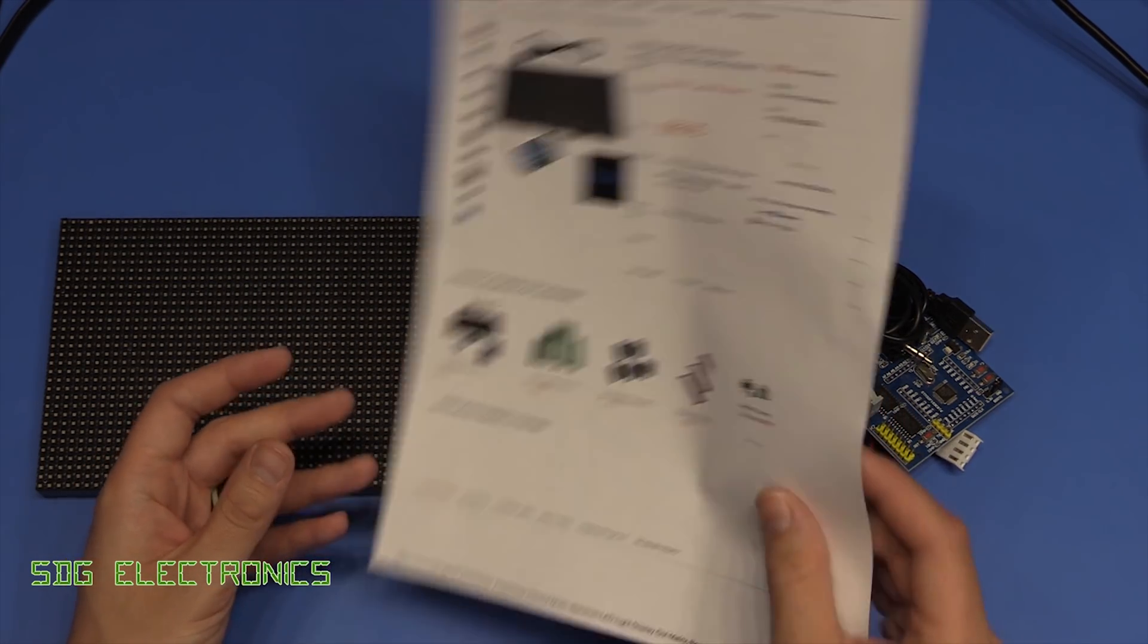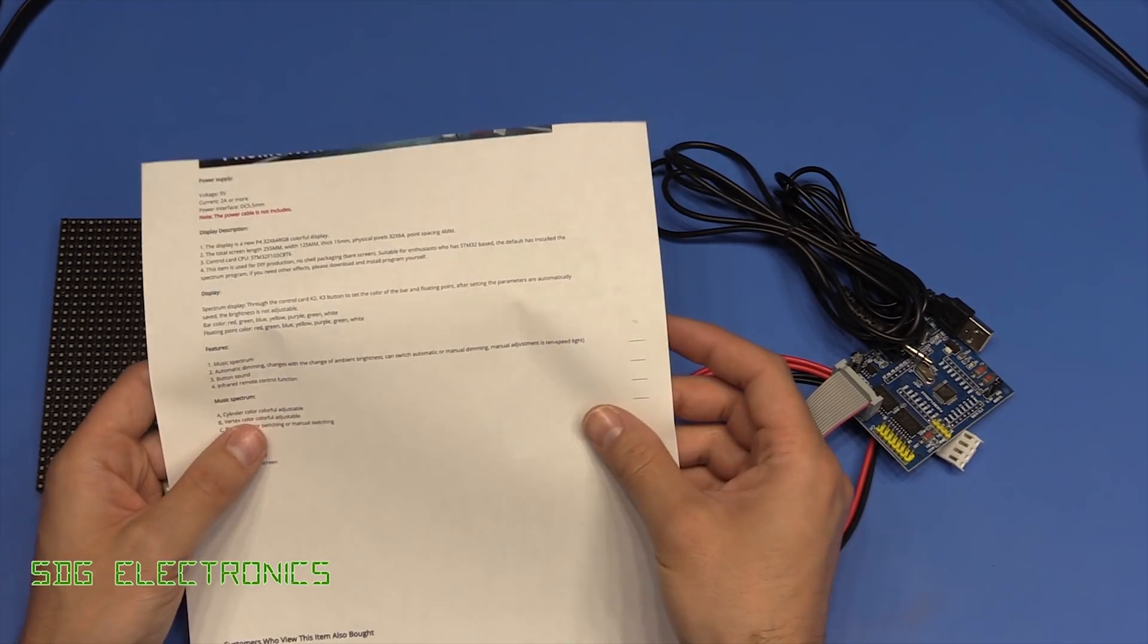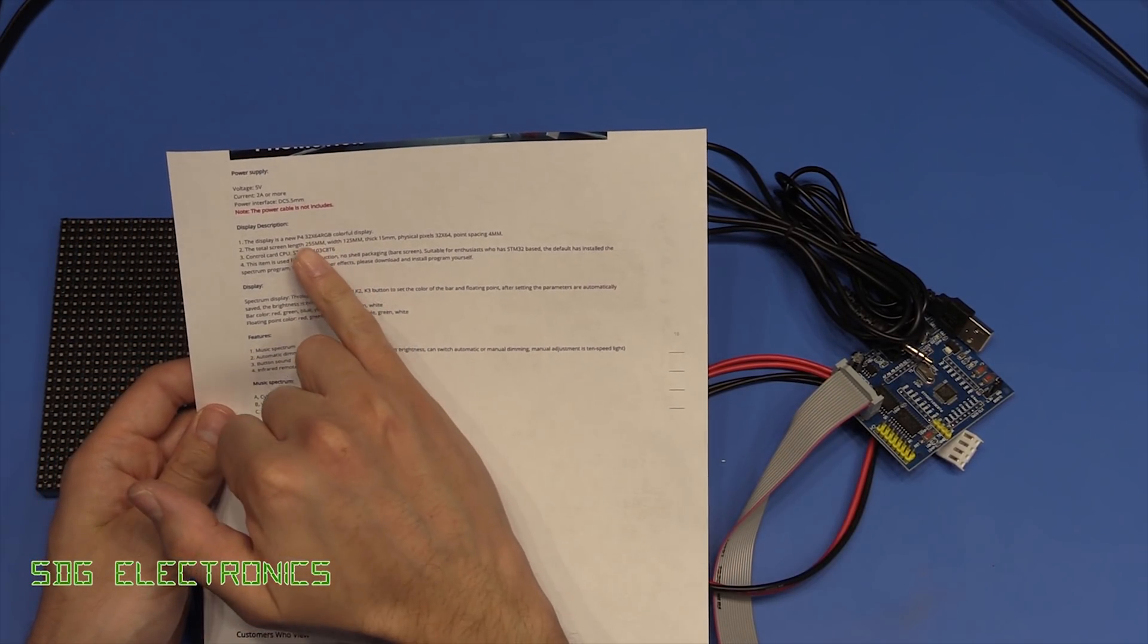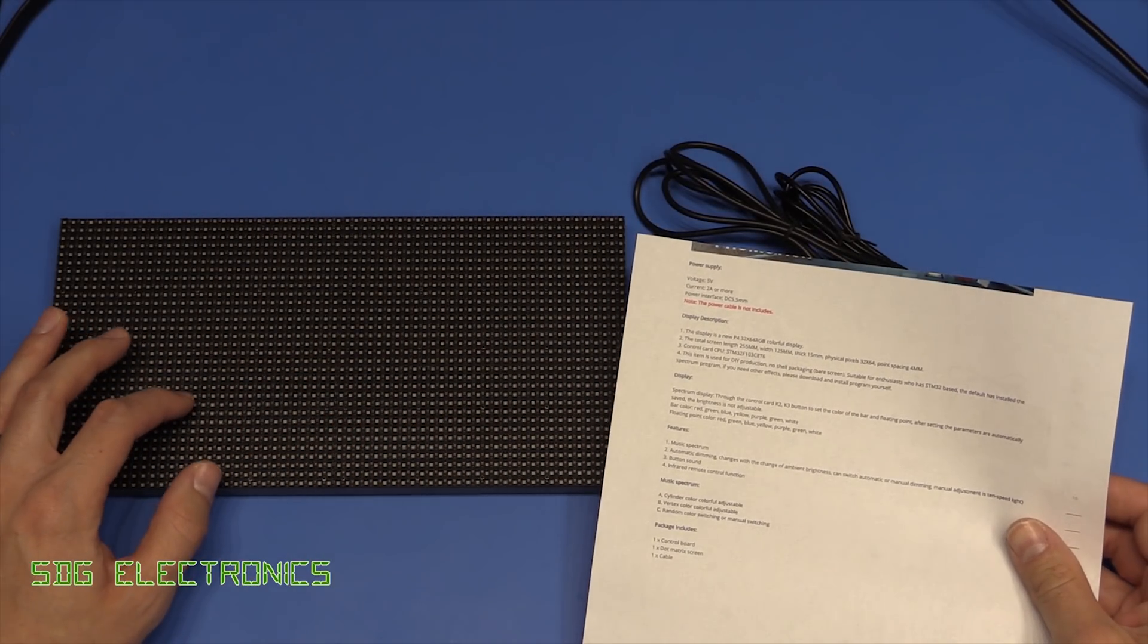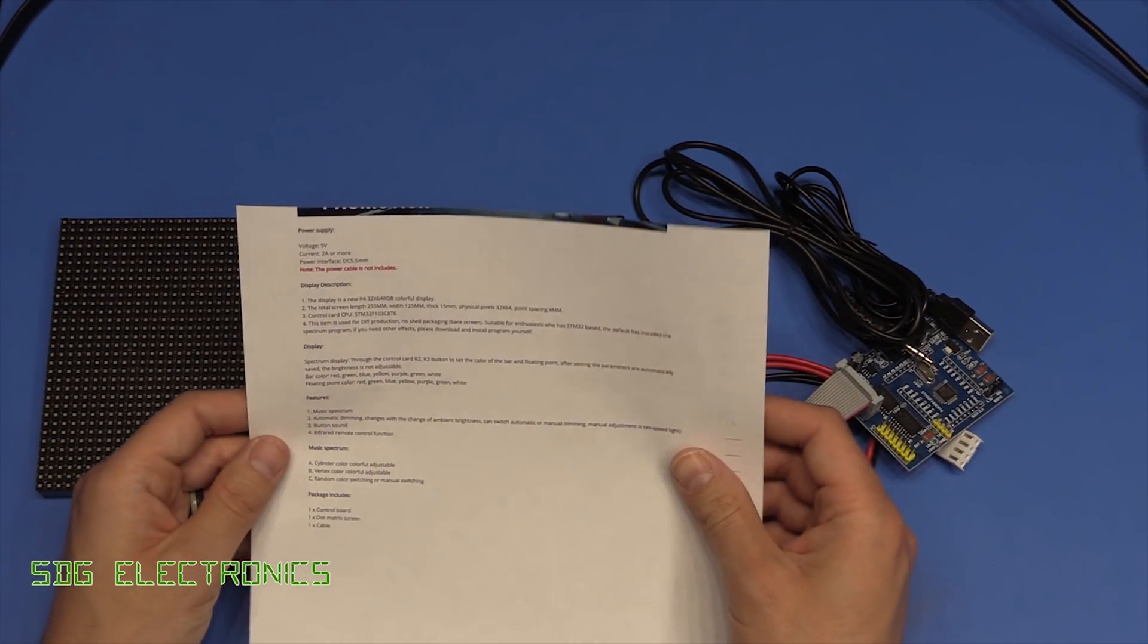There's not really a whole lot of detail on this. Basically what it says is it's got a display 32 by 64, so these are all individual RGB pixels which is why it was quite interesting to me.